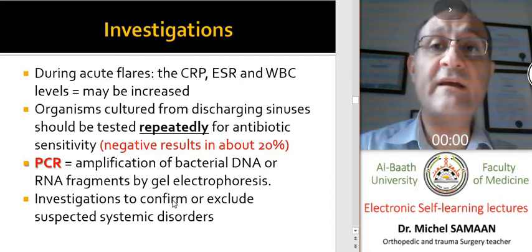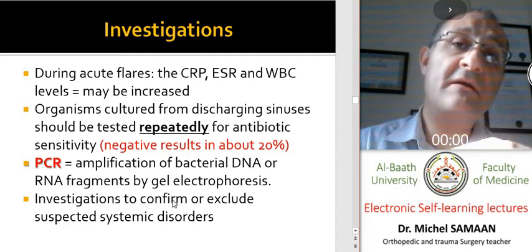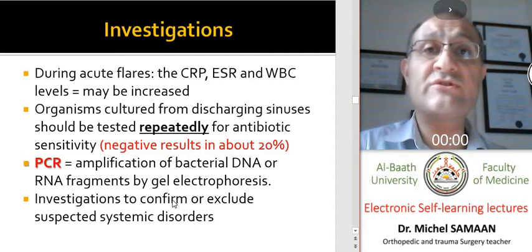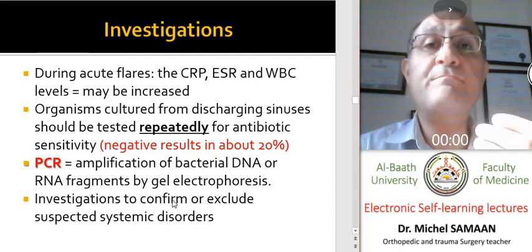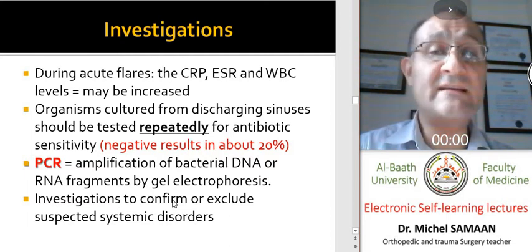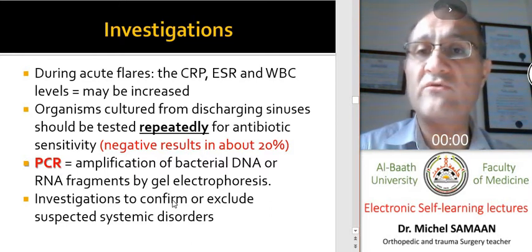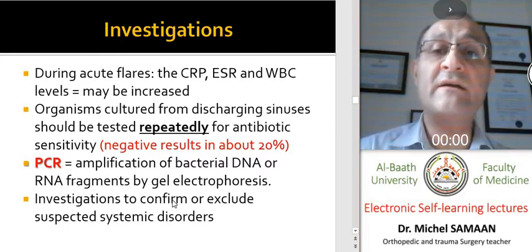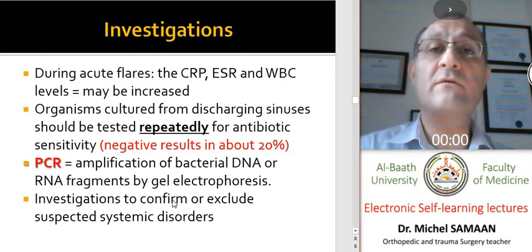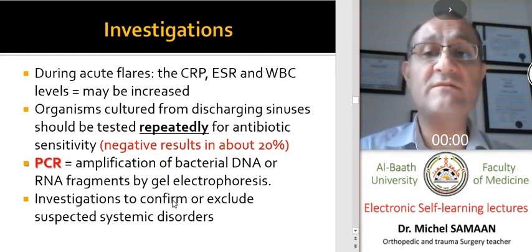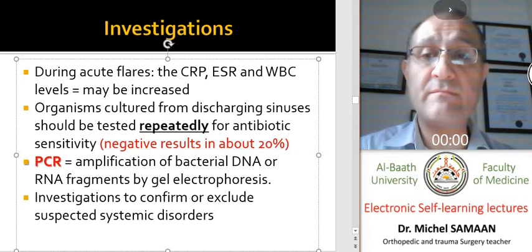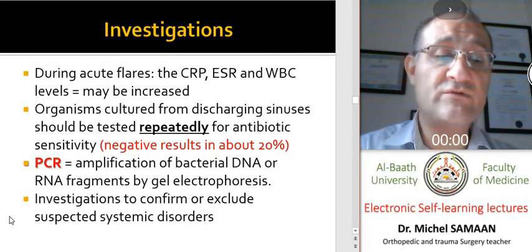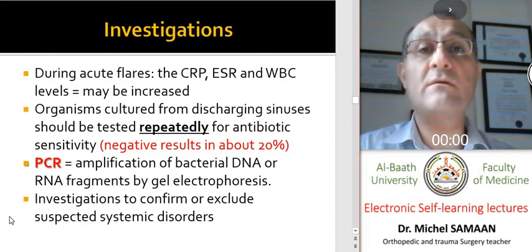Between acute flares, blood values may be near normal. Bacterial cultures change from time to time, so repeated culture and sensitivity tests should be performed. The use of PCR is very helpful to identify the organism and guide antibiotic treatment. We should always identify and treat systemic disorders to augment the host's immune response.